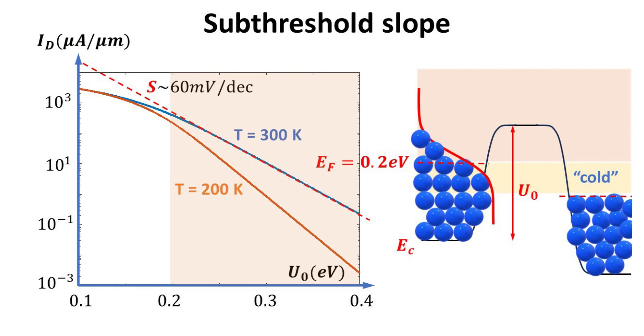When the temperature is reduced to 200 Kelvin, we see that the subthreshold slope also reduced accordingly, to 40 millivolts per decade. We stress here that the subthreshold behavior is purely just carrier statistics.